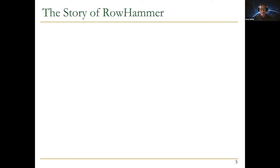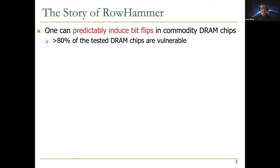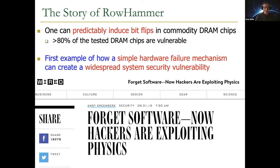Rowhammer is one example of this bit flip that may be affecting critical infrastructure. What is Rowhammer? It's essentially the fact that you can predictably induce bit flips in commodity DRAM main memory chips today, and more than 80% of the chips out in the field are vulnerable. In my opinion, this is the first example of how a simple hardware failure mechanism can create a widespread system security vulnerability. A lot of folks who think about software are now saying hackers are exploiting physics — and I think this is a nice characterization of what Rowhammer is about.